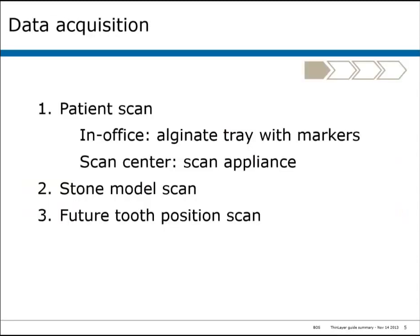For data acquisition, we'll need a patient scan. If you have a scanner in your office, this can be done with an alternate tray with fiducial markers on it. If you do not have a scanner in your office, a scan appliance can be made and the patient wears the scan appliance when they have their scan done at a scan center or in a mobile scanner.